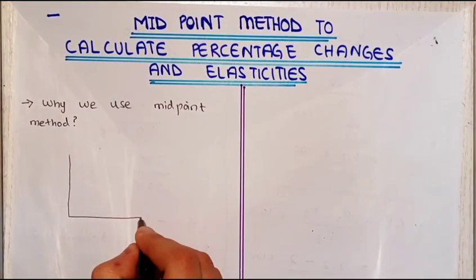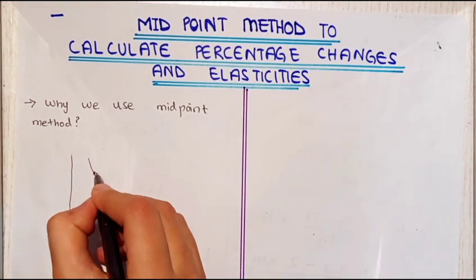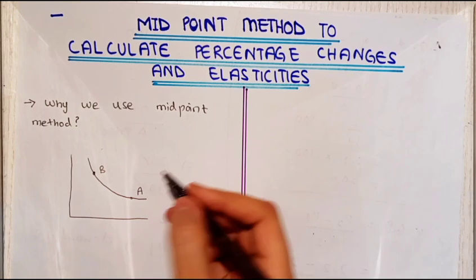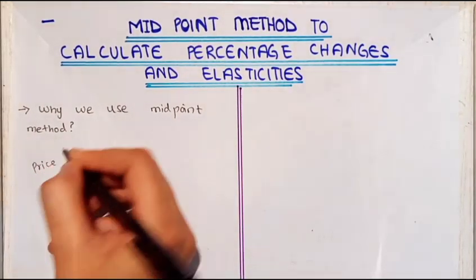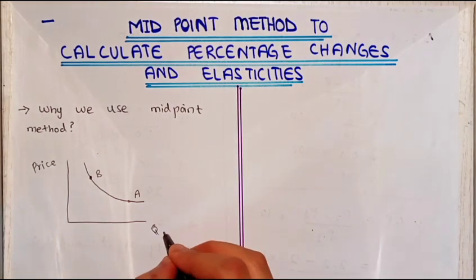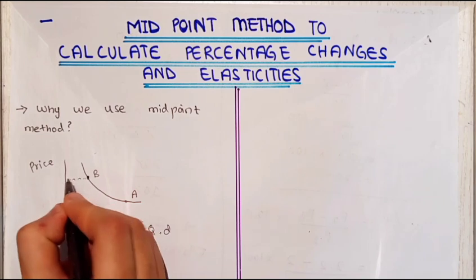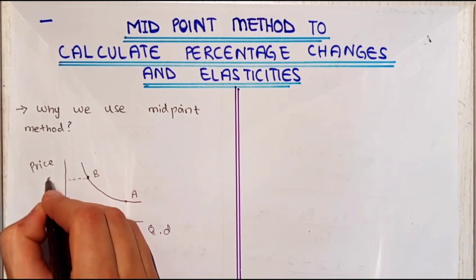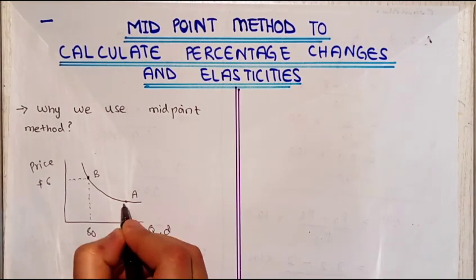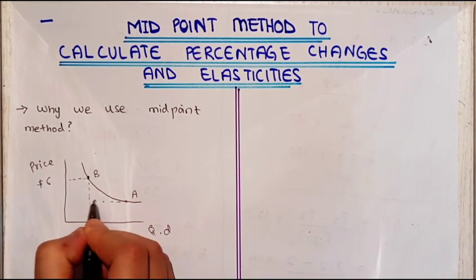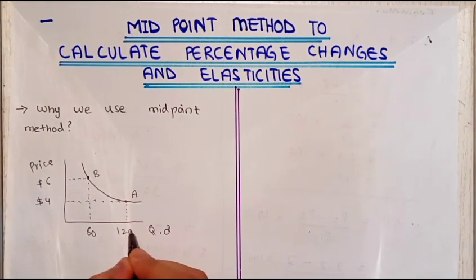For example, you have a graph here with point B and point A. On the y-axis, price is given, and on the x-axis, quantity demanded is given. Let us assume that at point B the price is six dollars and the quantity is 80, and at point A the price is four dollars and the quantity is 120.